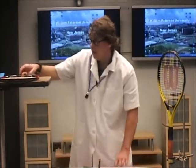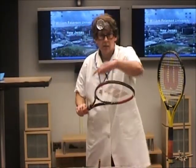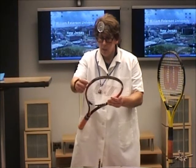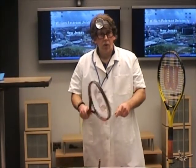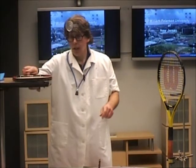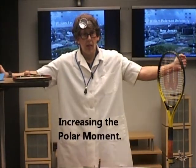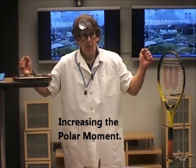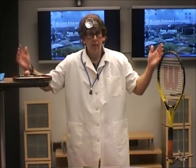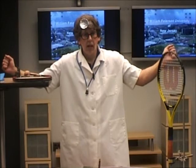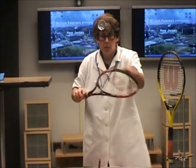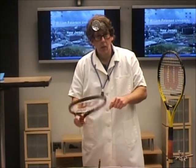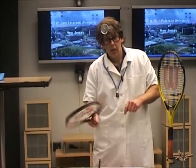That's the basic premise here: increasing the size of the head or putting weights on the sides of the racket increases the moment of inertia by having bigger masses further away — either by increasing racket head size or having masses on the perimeter of the racket. That will help you with your twisting problem.